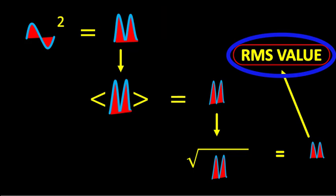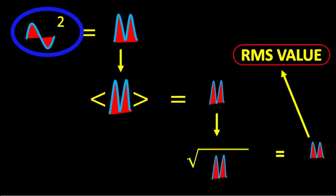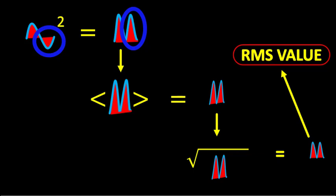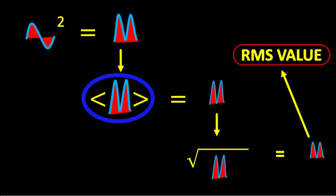To find the RMS value, first of all we square the waveform. This way the negative half cycle is converted into a positive half cycle. Then we take the average of the resultant waveform.